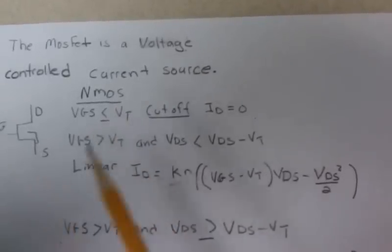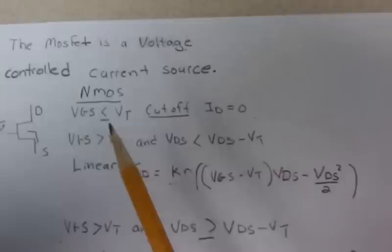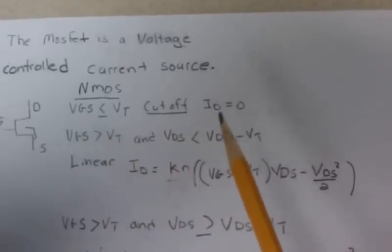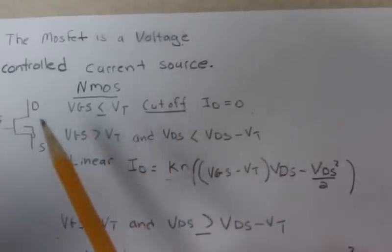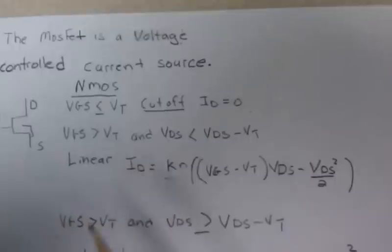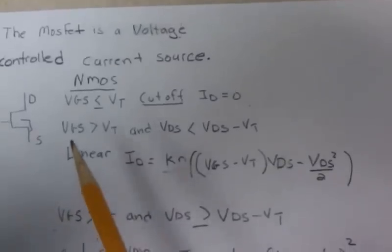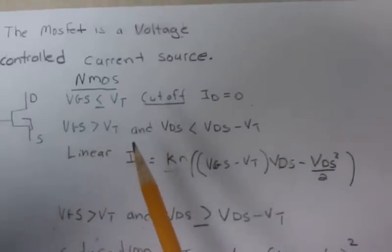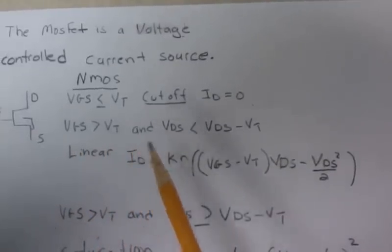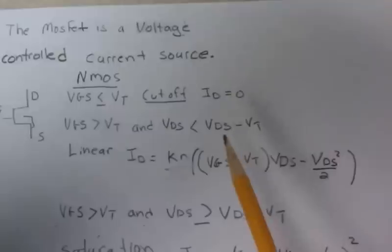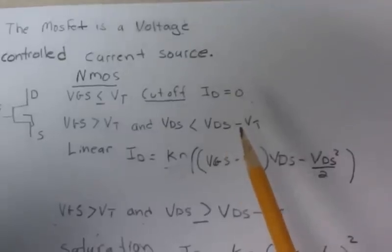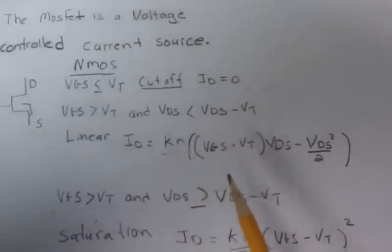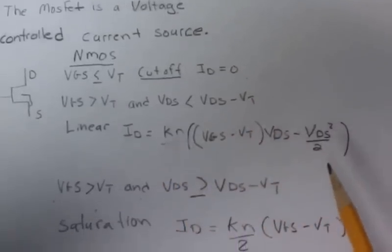If the VGS voltage is less than the threshold voltage, you're in cutoff and you can consider ID as zero. If VGS is greater than VT — above threshold — and VDS is less than VGS minus VT, that's linear, and you get this relationship here.